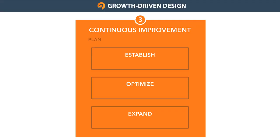So what does a performance roadmap look like? There are three major themes: Establish, Optimize, and Expand.